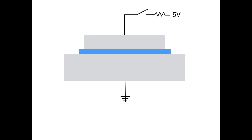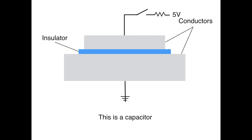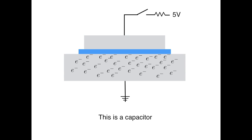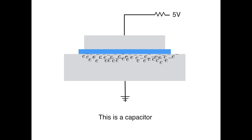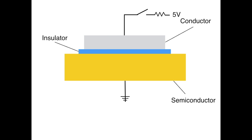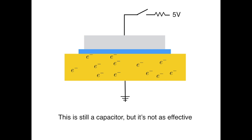Let's review capacitors one more time. Here I have two conductors separated by an insulator — this is still a capacitor — and the switch is open, so the circuit is not connected. In the lower and upper conductor there are many free electrons. When we close this switch, these electrons will gather near the top of the bottom conductor, and consequently holes will gather near the bottom of the top conductor. Now if instead of a conductor I use a semiconductor in the bottom — a semiconductor is like a conductor in that you can take an electron out of its valence shell, but it requires more energy to do so — this is still a capacitor, but it's not as effective. There are fewer free electrons, so when we close the switch we get a gathering of electrons and holes, but not as many as before, and its capacitance is not as high.